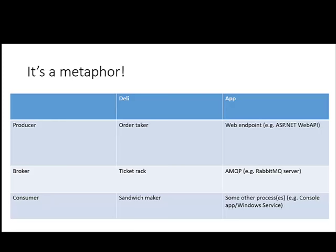In the architecture, the ticket rack is some sort of AMQP implementation, like a RabbitMQ server, which is what we're going to be talking about. And then finally, the last piece is the consumer. In the deli, this is the sandwich maker. In our architecture, this will be some other process or processes — like a console app or a Windows service or something like that — that will actually take those messages out of RabbitMQ and do some work with those messages.